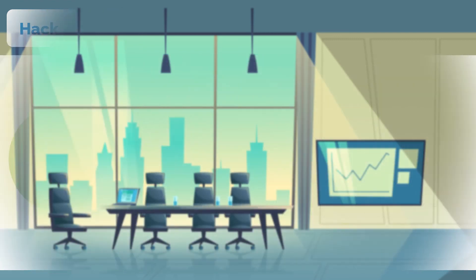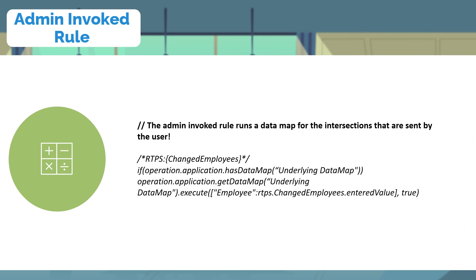Finally, the admin rule — the rule being called from step two — is another Groovy rule that accepts the employee string and runs the underlying data map only for the changed employees. What we accomplished in this hack is the ability for the planner to use REST API invocation to run other planning artifacts as an admin.